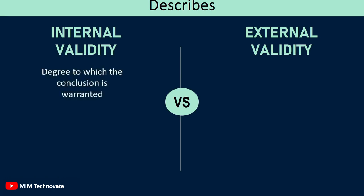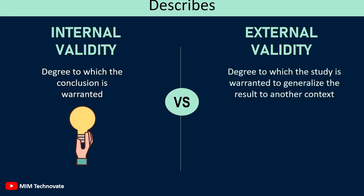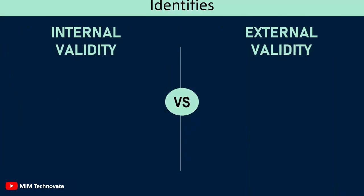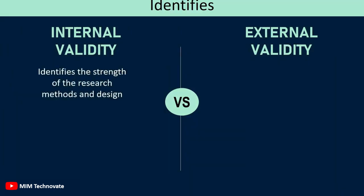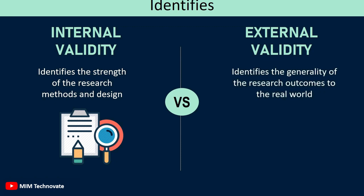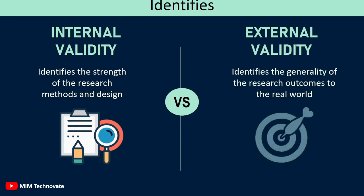Internal validity describes the degree to which the conclusion is warranted. As against this, external validity ascertains the degree to which the study is warranted to generalize the result to another context. Internal validity identifies the strength of the research methods and design, while external validity identifies the generality of the research outcomes to the real world.